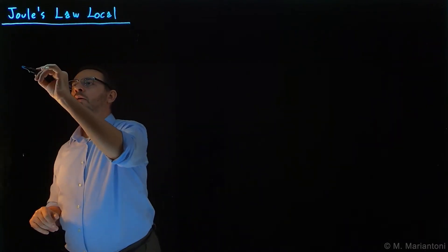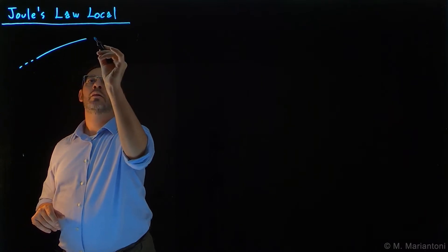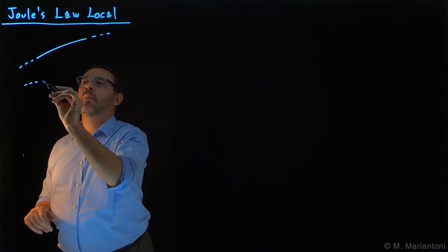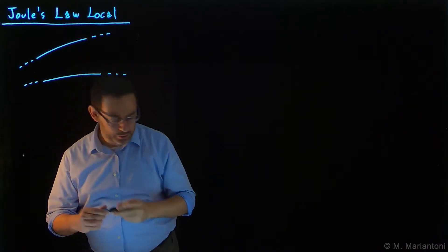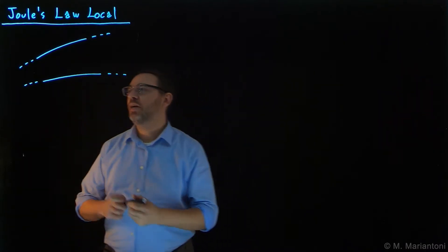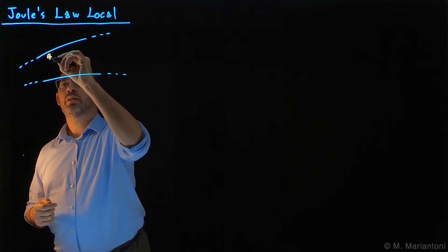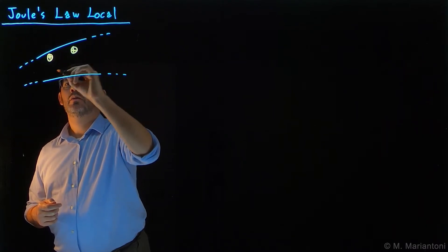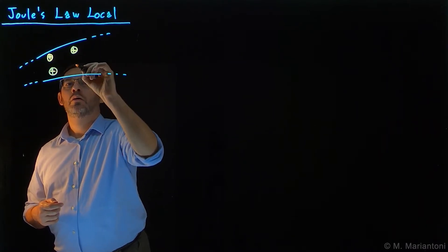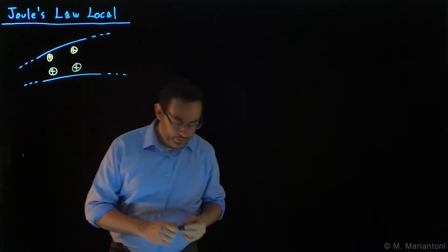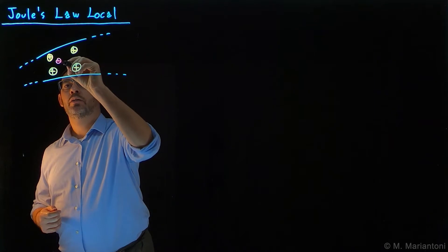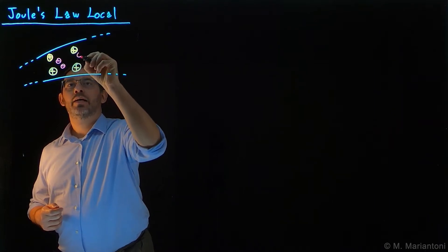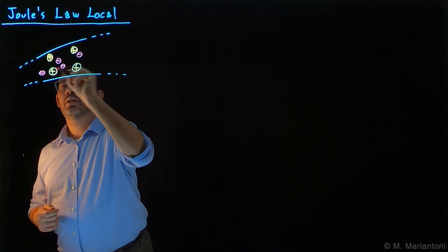If you consider an electrical wire, like the one sketched here, that's made of copper, we know that within this conductor we have positive ions which are fixed in space, and negatively charged carriers, the electrons, which can move and bounce against each other as well as against the positive ions.